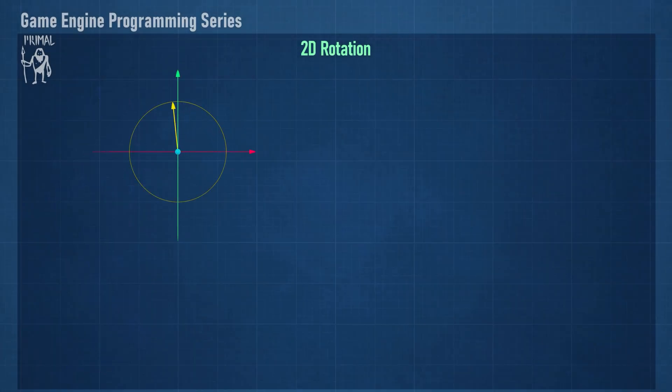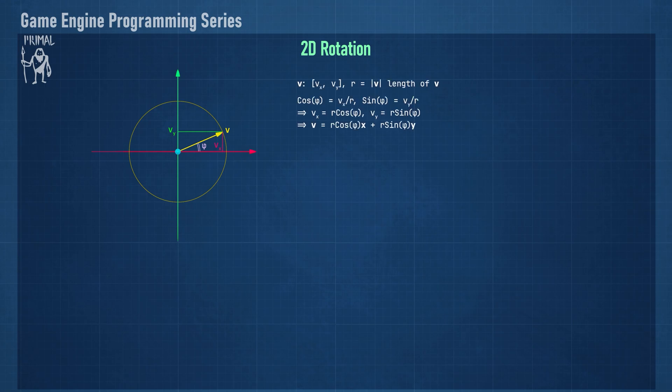Let me start with a relatively simple case of rotating a vector on a 2D plane. Consider a vector v with a length of r at an angle phi with the x-axis. The cosine of phi is defined as the x component of v divided by its length. Similarly, the sine of phi equals the y component of v divided by its length. From this we can write vector v in terms of the angle phi.